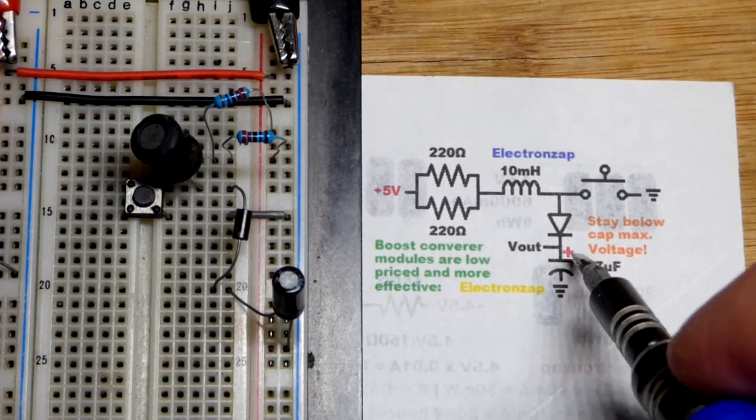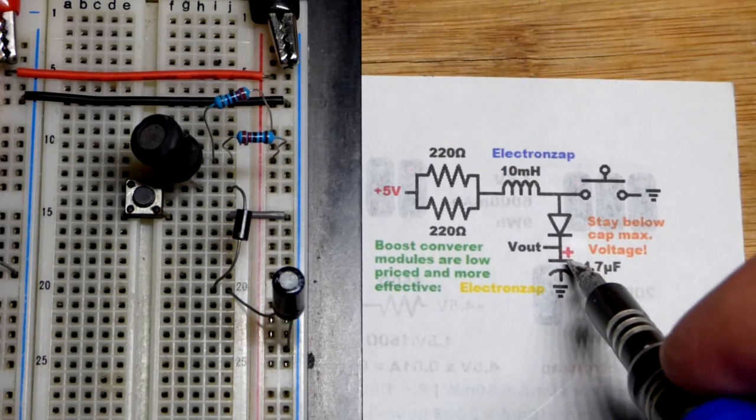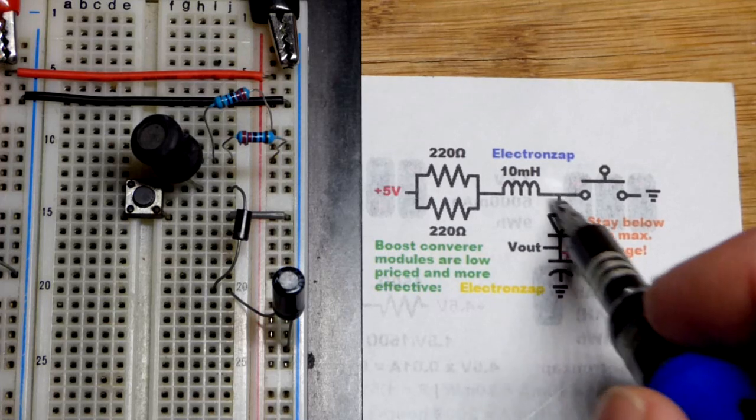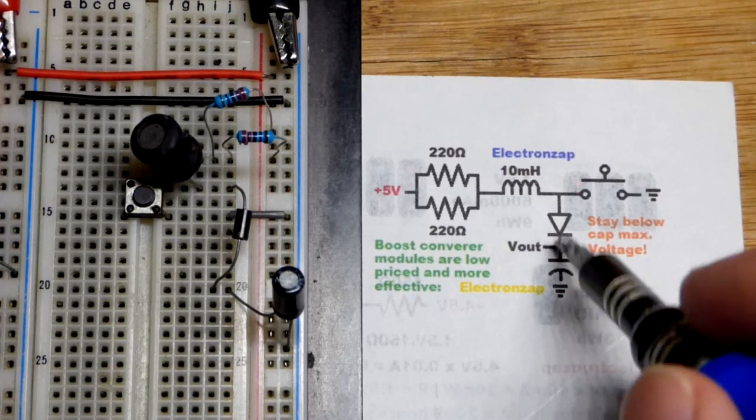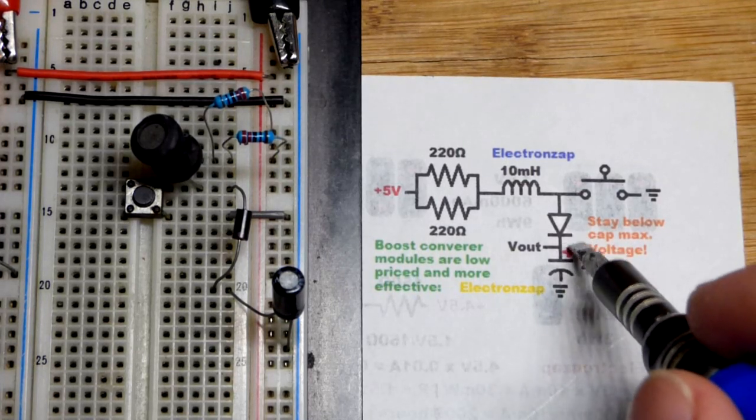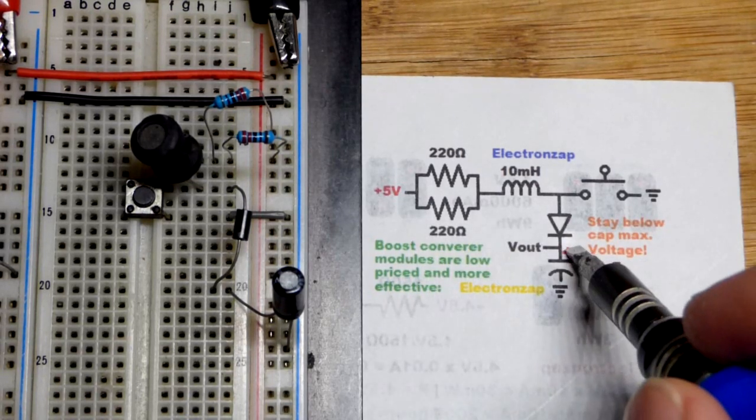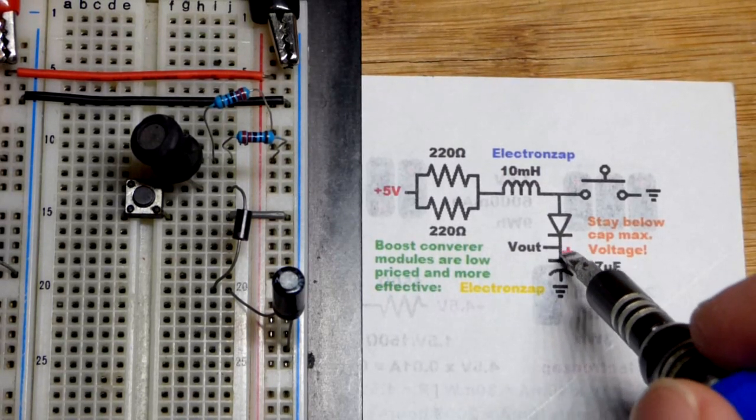First thing it's going to do is charge the capacitor up to 4.5 volts approximately. We've got 5 volts and the diode there is forward biased. At very low currents, it stops conducting at like 0.5 volts away from the supply voltage. The capacitor will charge, that's the main thing.